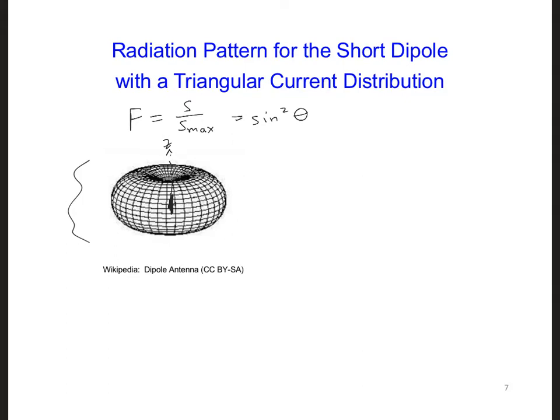Around the antenna, we plot the amplitude of F. Here I'm showing a three-dimensional plot of the radiation pattern for this antenna.